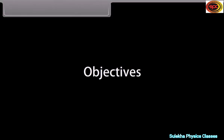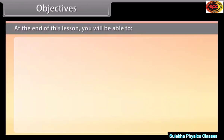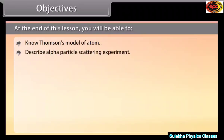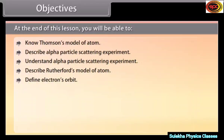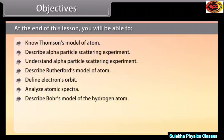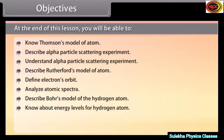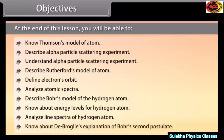Objectives: At the end of this lesson you'll be able to know Thomson's model of atom, describe and understand the alpha particle scattering experiment, describe Rutherford's model of atom, define electron's orbit, analyze atomic spectra, describe Bohr's model of the hydrogen atom, know about energy levels of hydrogen atom, analyze line spectra of hydrogen atom, and know about de Broglie's explanation of Bohr's second postulate.